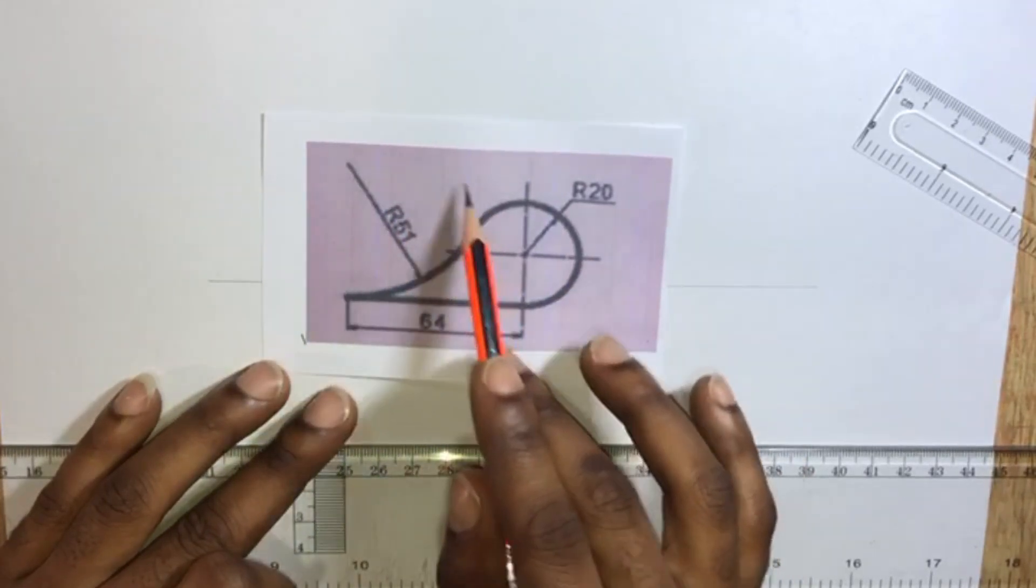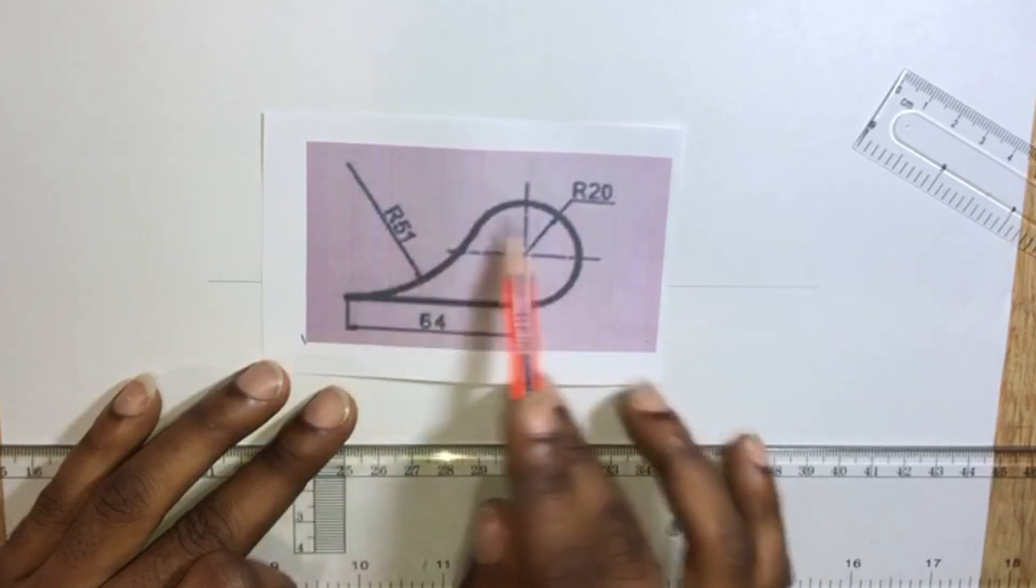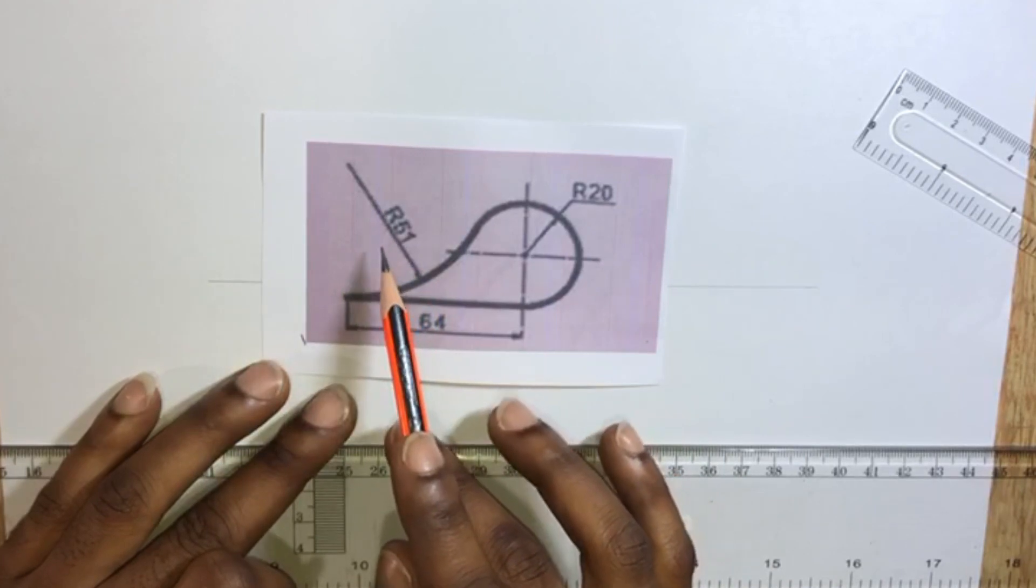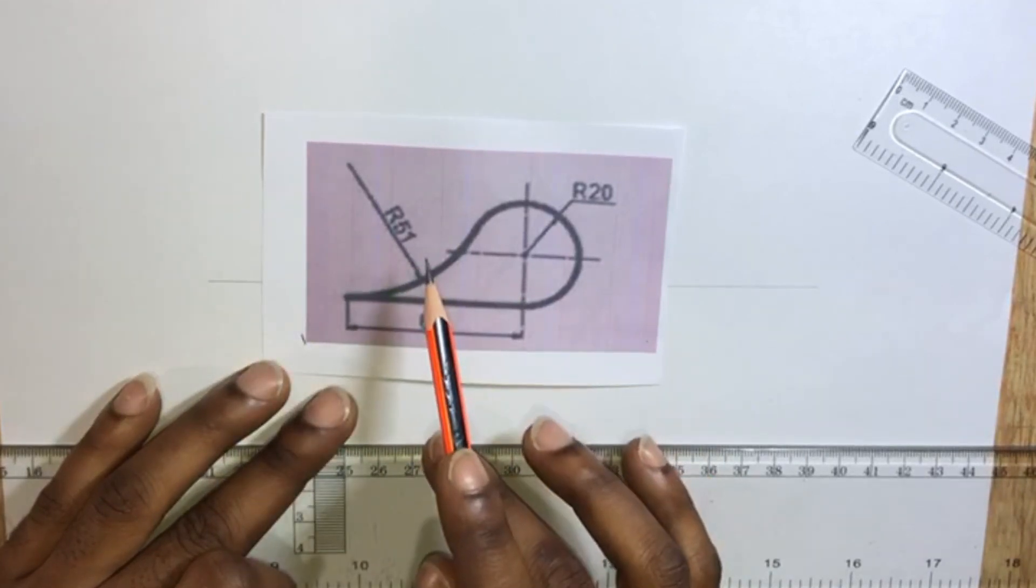Since they touch externally, we'll be adding the two radius. So we have 20 plus 51 millimeters and this will give us 71 millimeters.